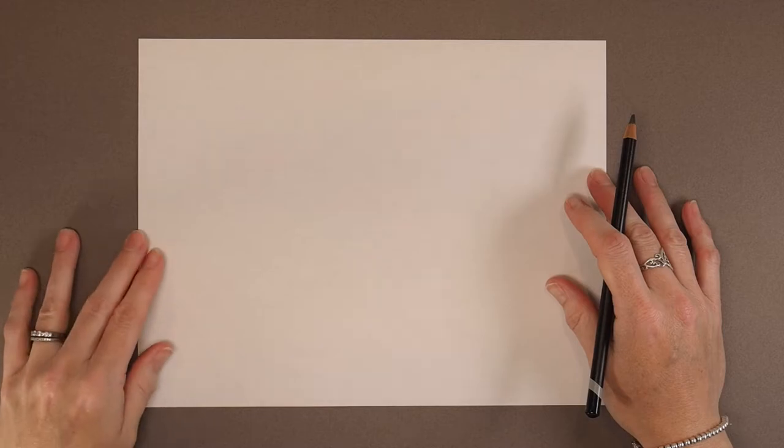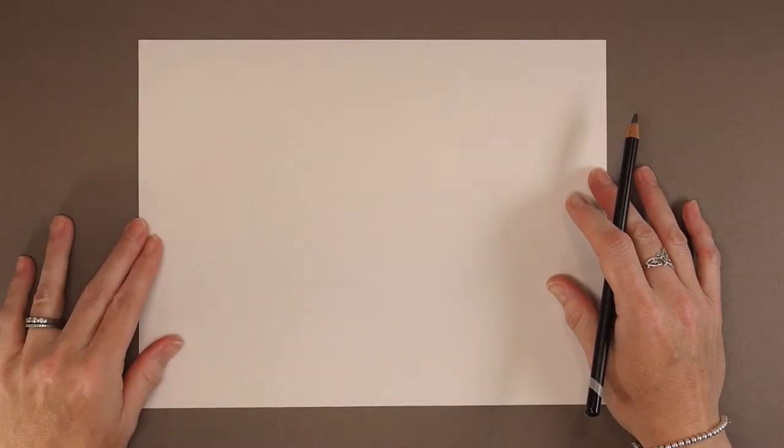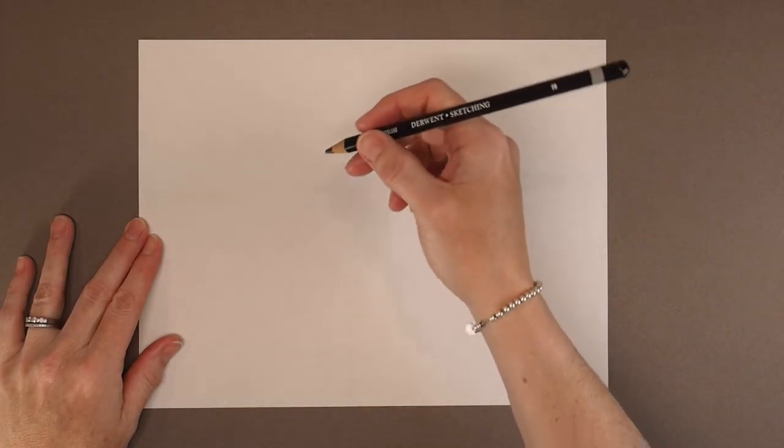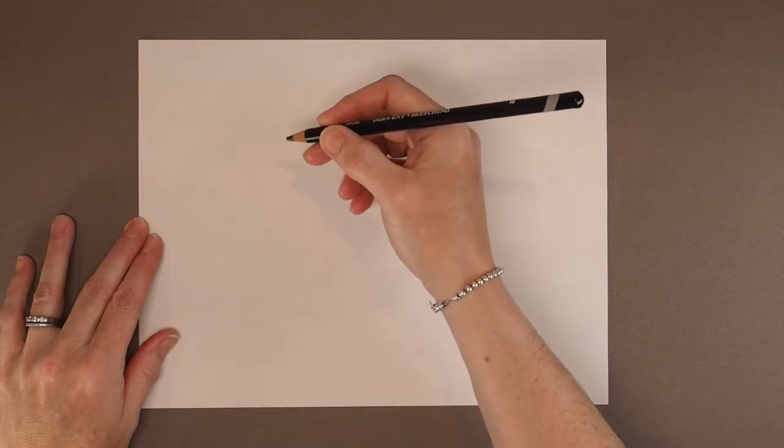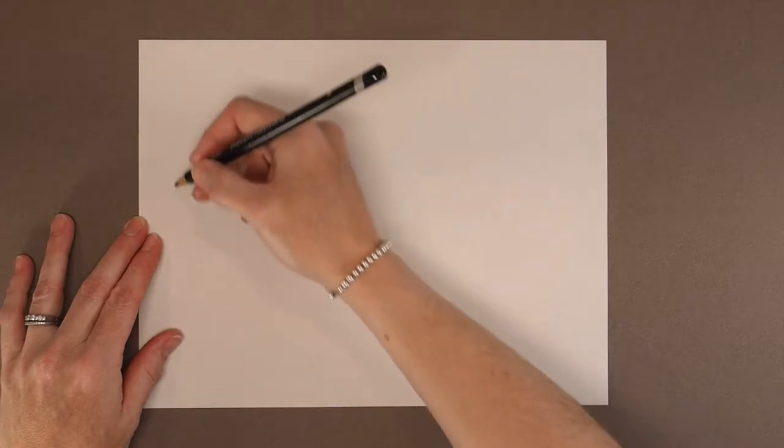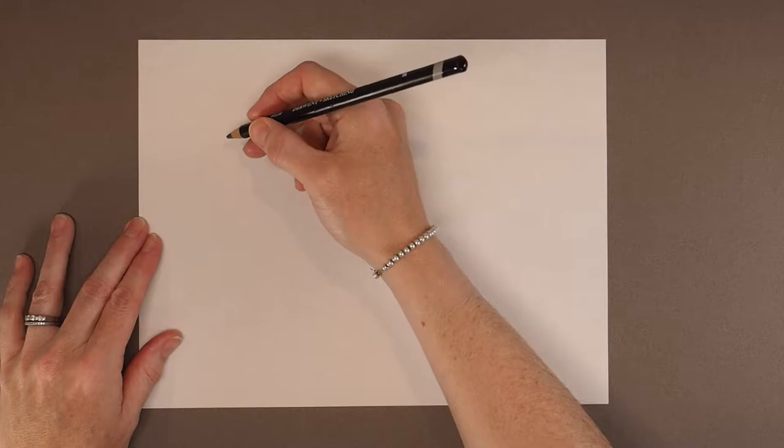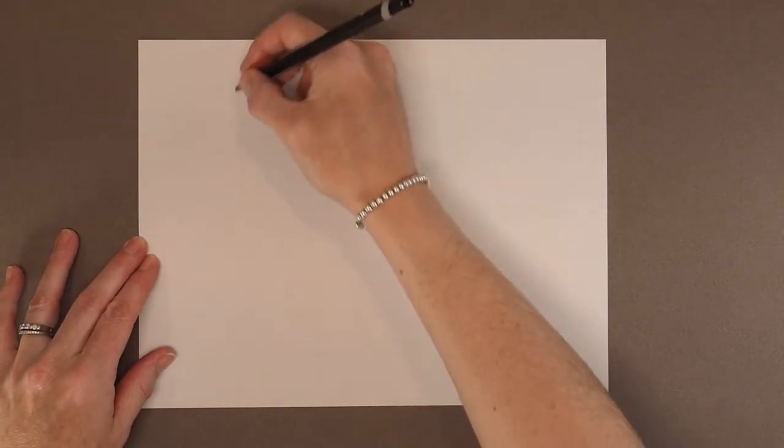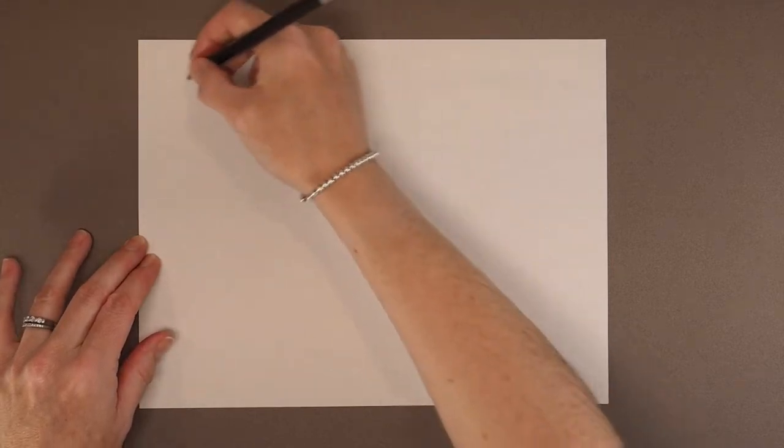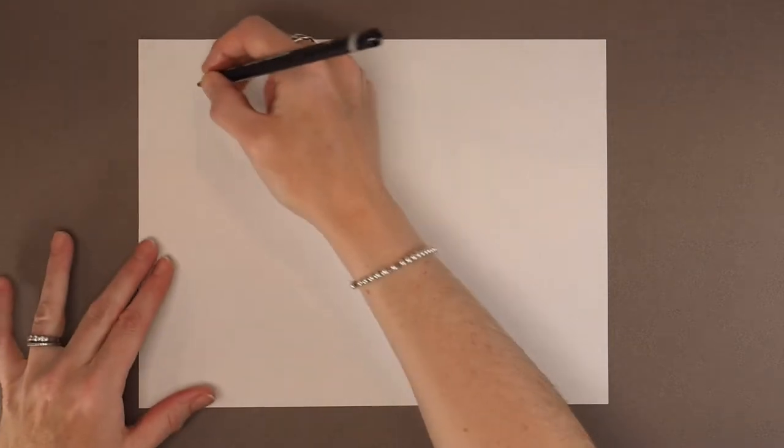The first thing I'm going to do when I'm getting ready to draw is to practice some basic shapes. Let's first practice some circles. I'm going to hold my pencil loosely, not too close to the tip, and I'm going to use my whole arm. You can see that my wrist is not bending. So I'm going to loosely draw some circles and I'm just balancing on my pinky finger there.